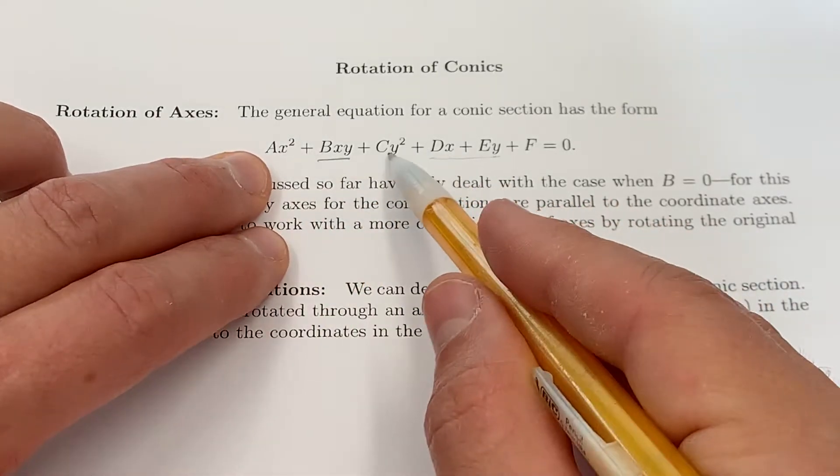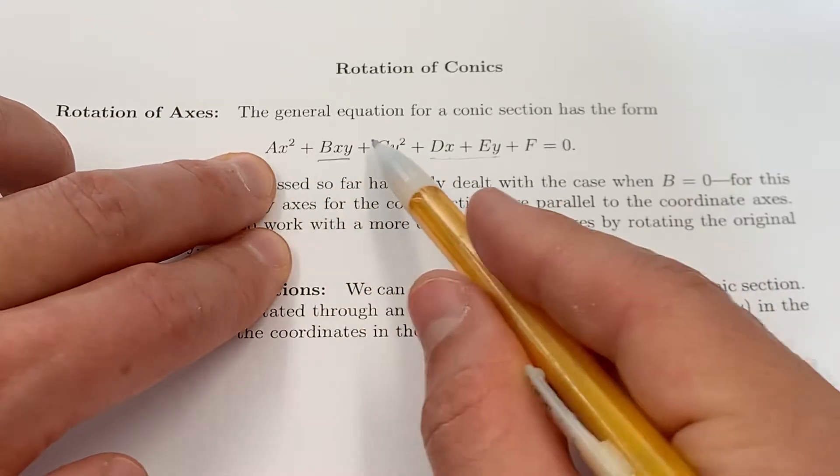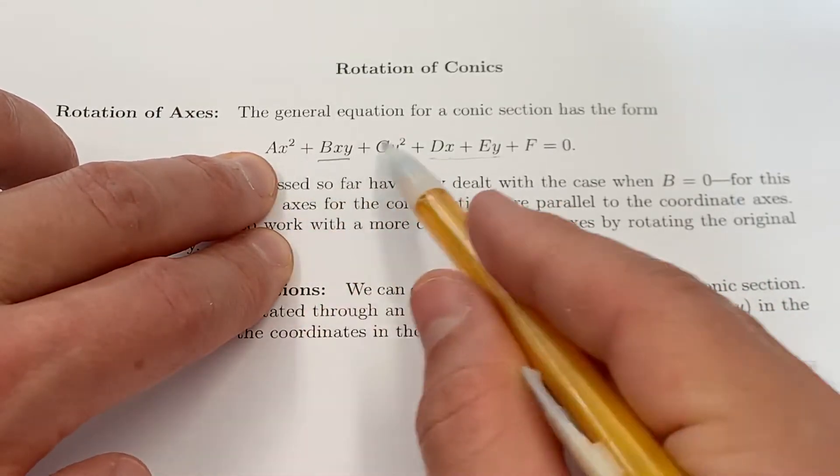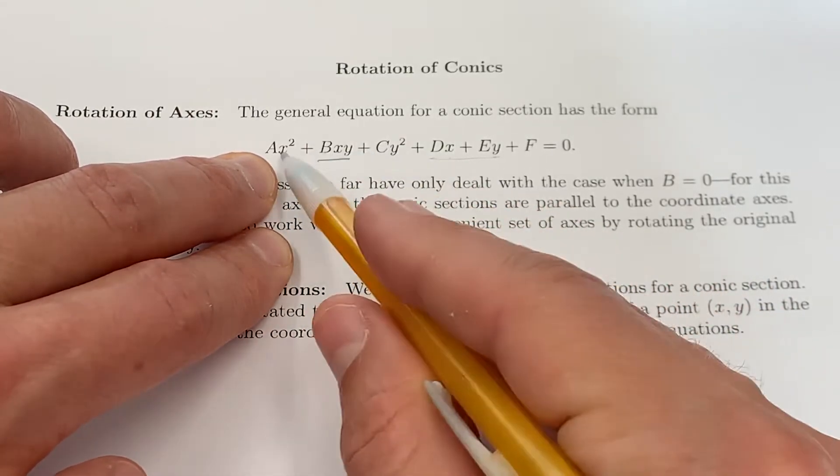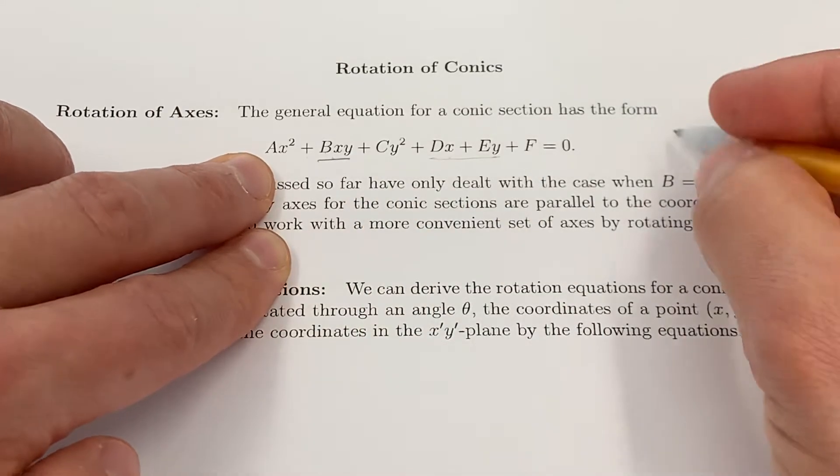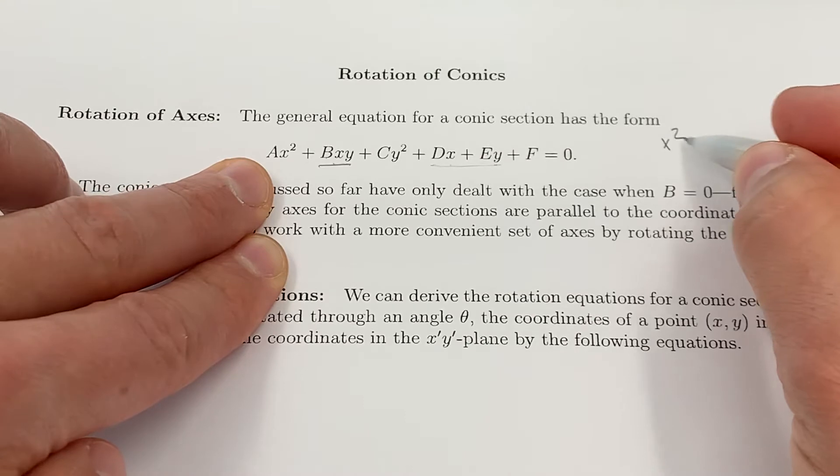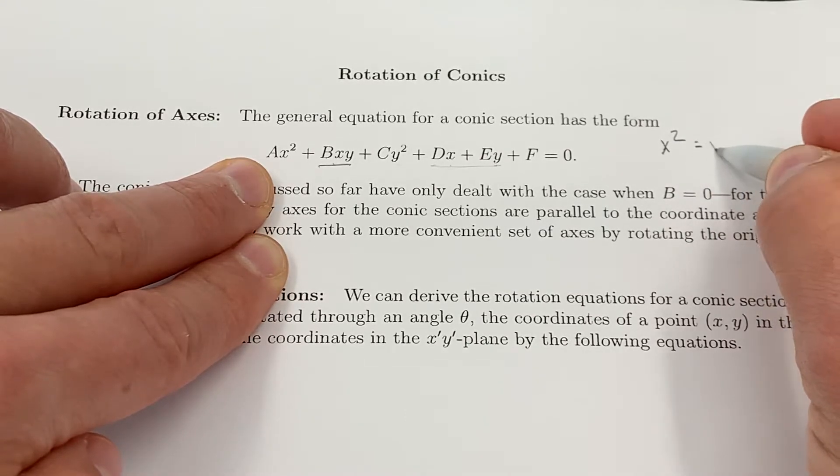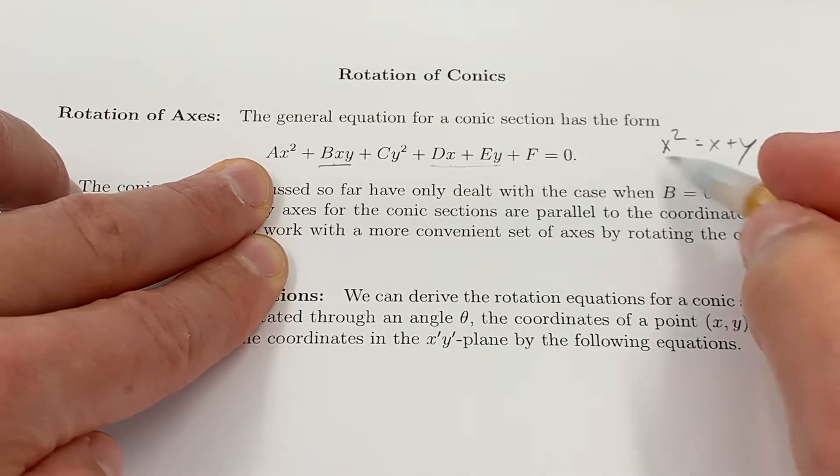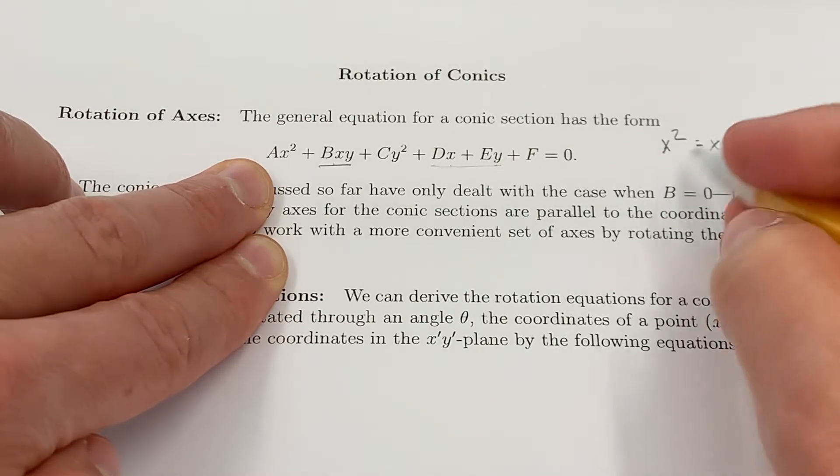But think about if a and b were the only non-zero terms here, if b was zero. If you had, say, x² and c was zero, if you had an x² and maybe an x term and a y term, well you could imagine that's going to be a parabola.